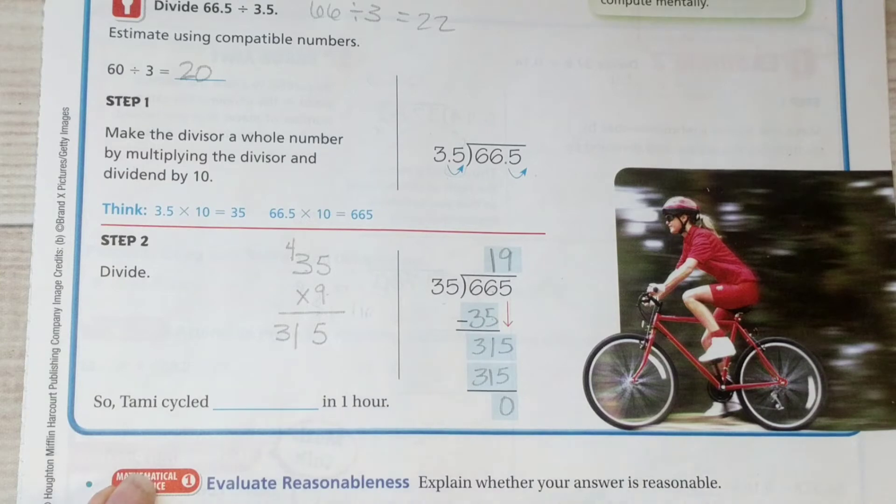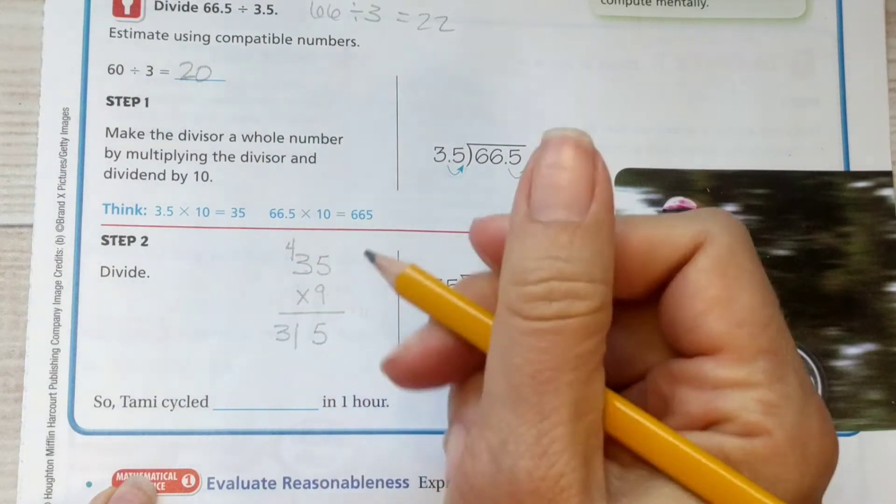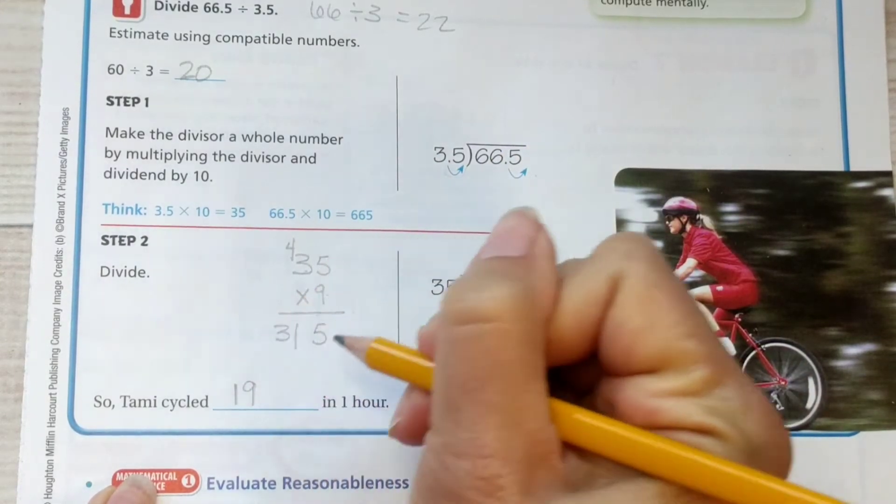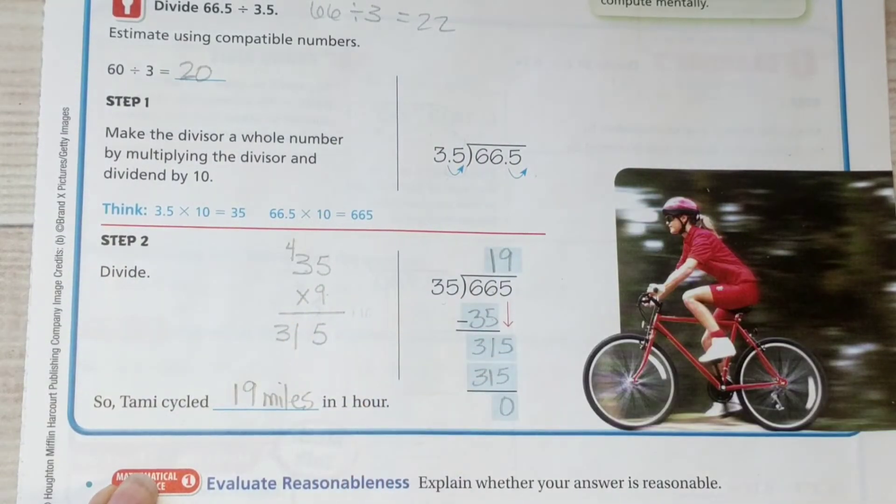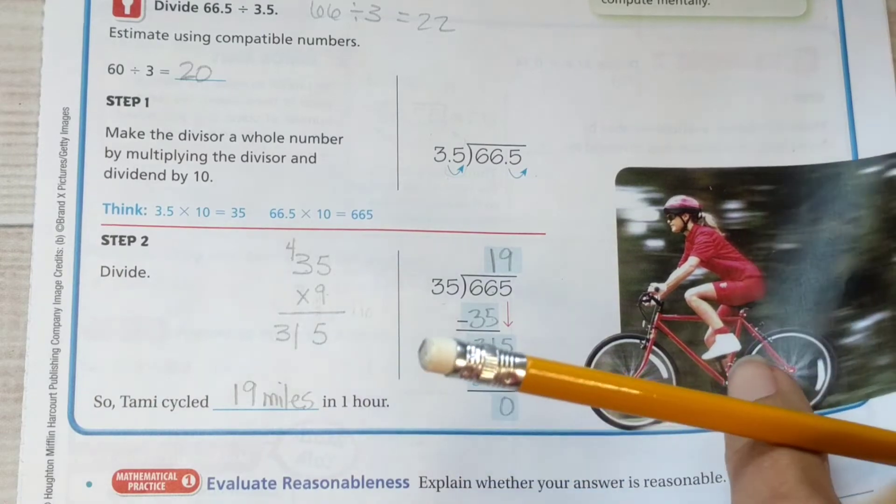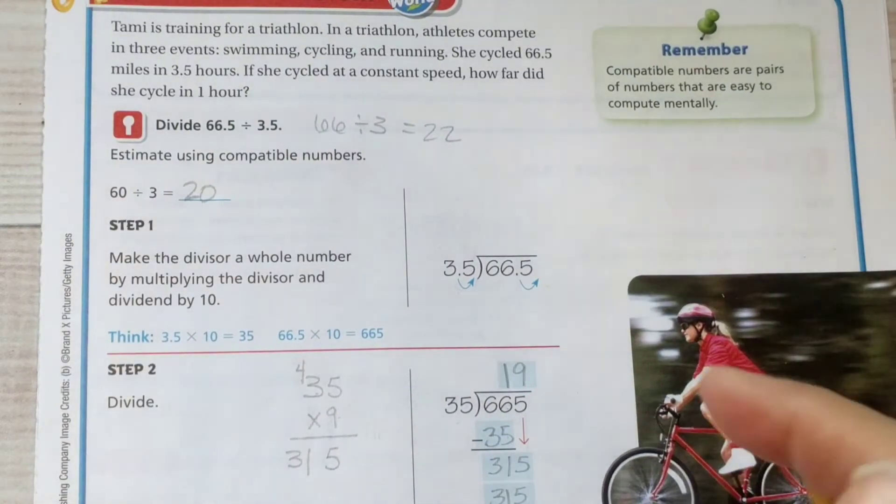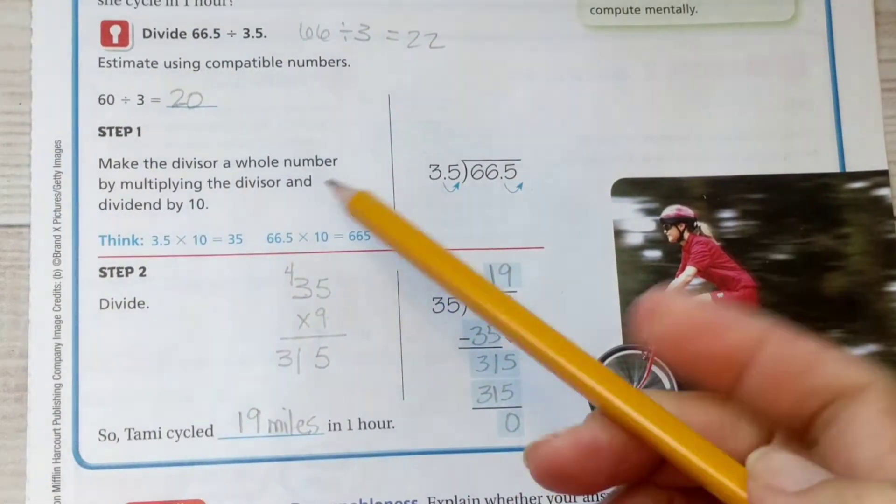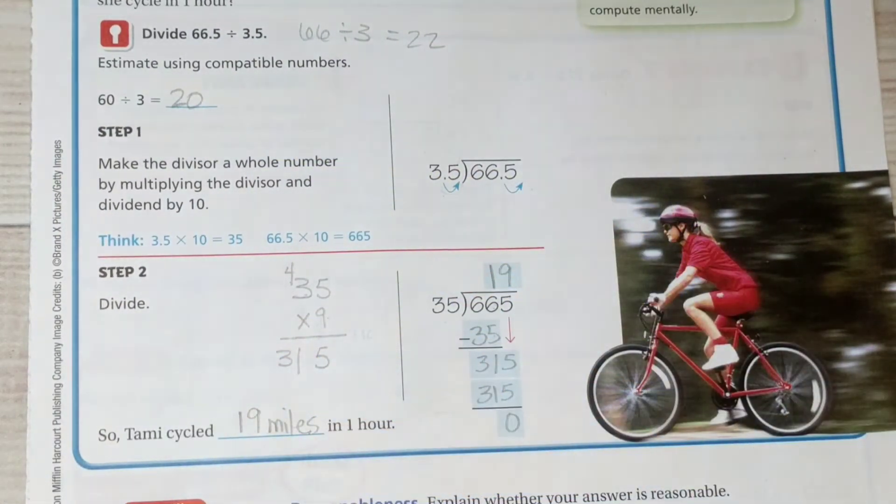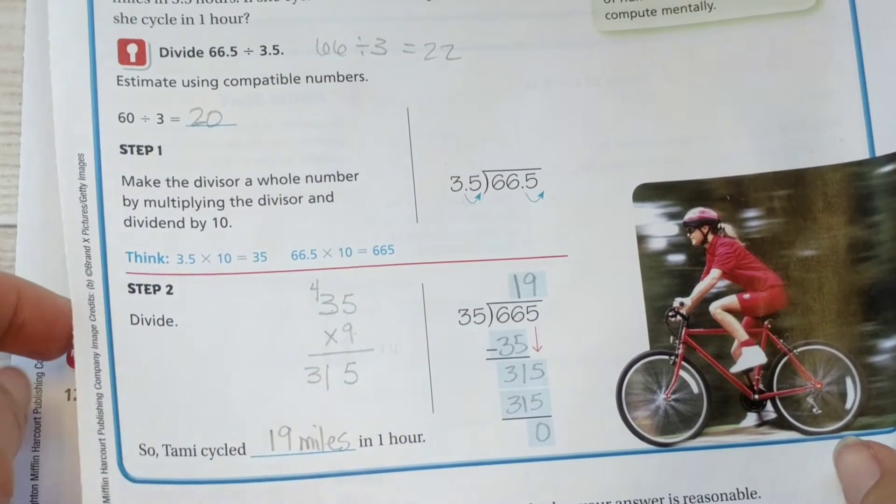So how fast was she cycling? She was cycling 19 miles every hour that she was training for her triathlon. Is our answer reasonable? Let's go back to what we had in the beginning. Is 19, our final answer, pretty close to 20 or 22? Yes. So our answer is reasonable. That's why we do the estimating first.